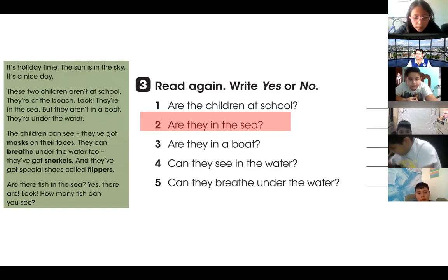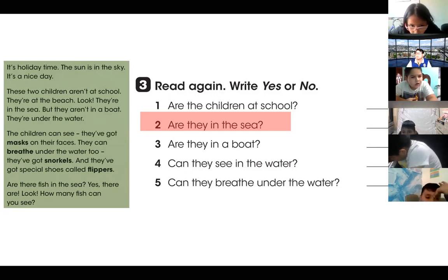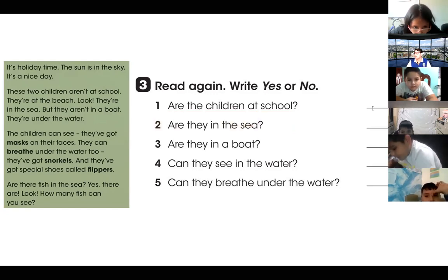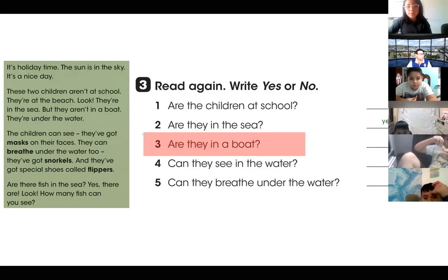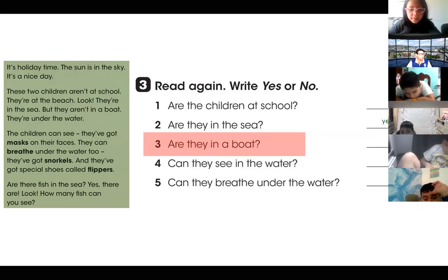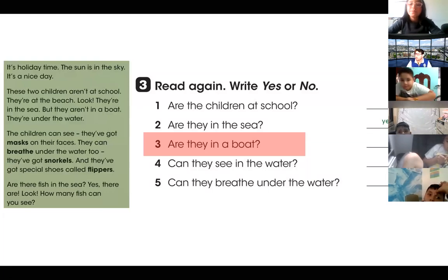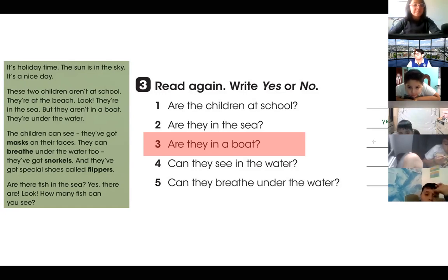I'm going to call another student. Eitan, you are going to ask your partner. Okay, I'm going to write your answer — your answer is yes. Now, Eitan, you are going to ask Astrid. Say: 'Excuse me, Astrid.' And ask her: 'Are they in a boat?' Excuse me, Astrid. Are they in a boat? Very good, Eitan. Astrid, are they in a boat? No. Very good, Astrid. That is the correct answer — no, they are not in a boat.